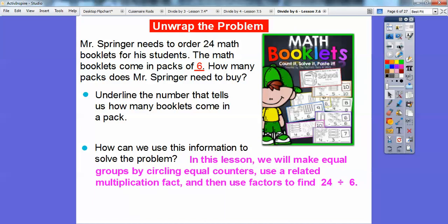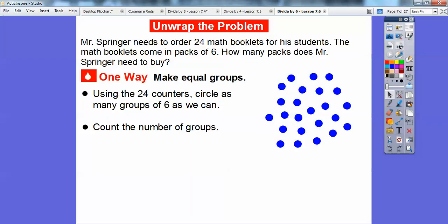How can we use this information to solve the problem? In this lesson, we'll make equal groups by circling equal counters - groups of six. Then we'll use related multiplication facts. And finally, we'll use factors of six to find 24 divided by 6. Let's do one at a time.